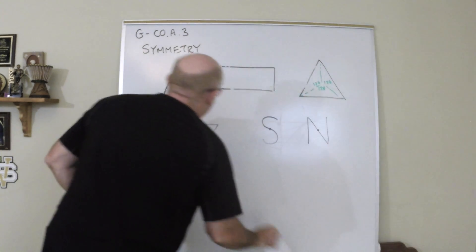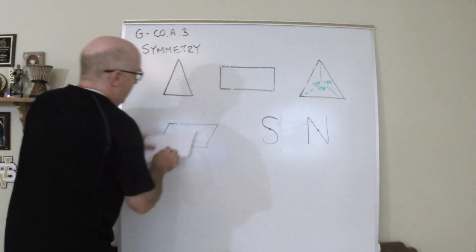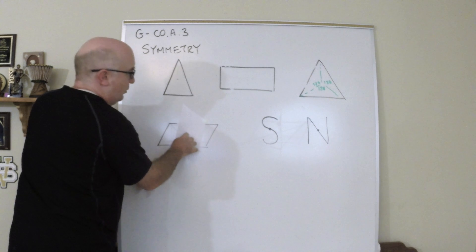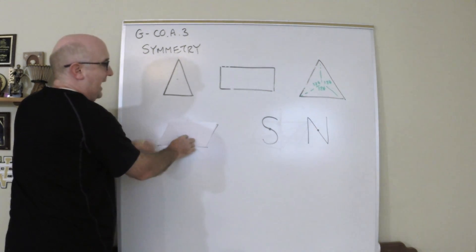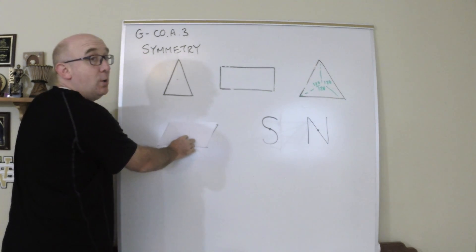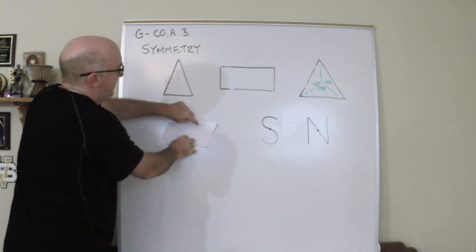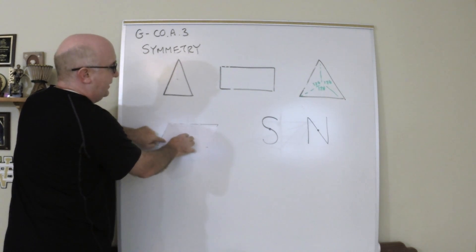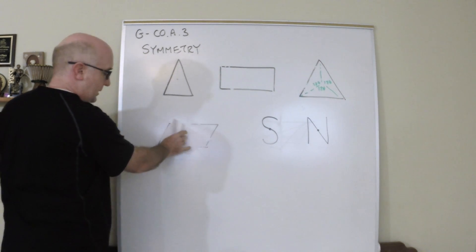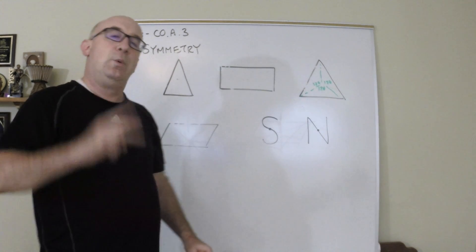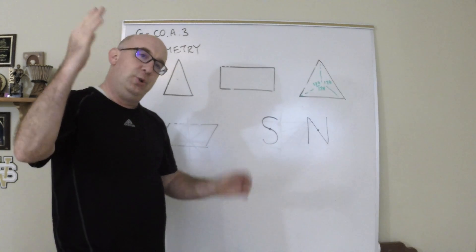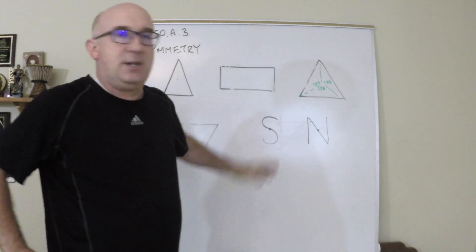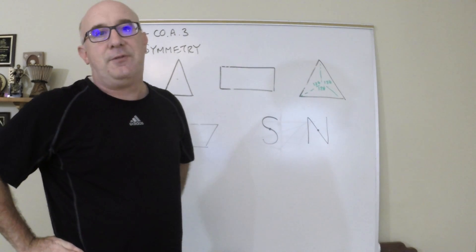Let's look at the parallelogram. At 90 degrees we're not there, but look what happens at 180 — we hit it nicely. Then 270 and back to 360. We get order two with an angle of 180.